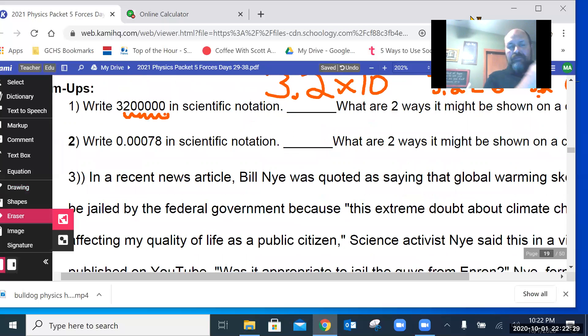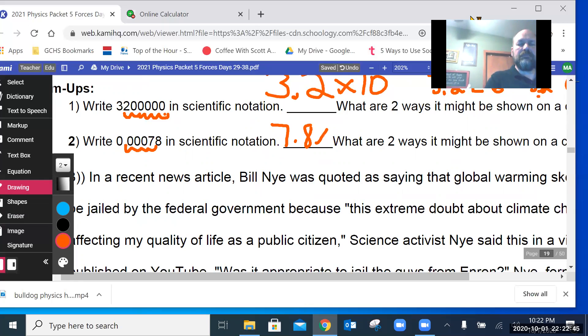Number two, write that number 0.00078 in scientific notation. Again, I move the decimal point so I end up with a number between one and ten. So I'm going to move that one, two, three, four places.